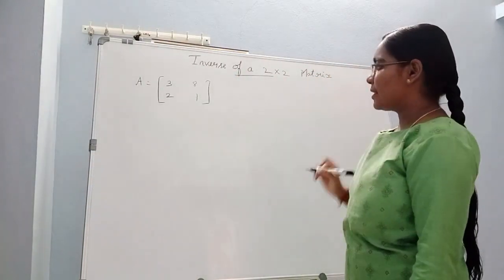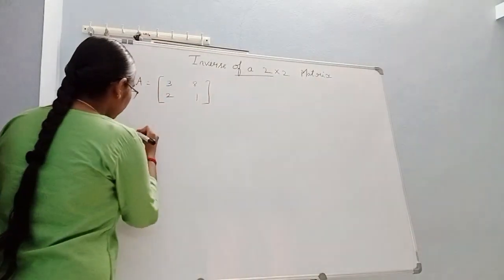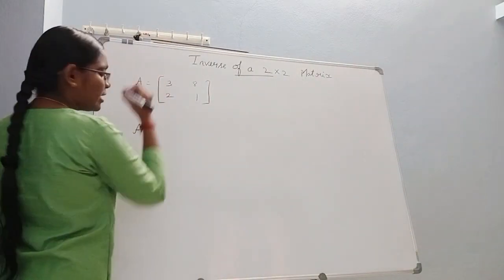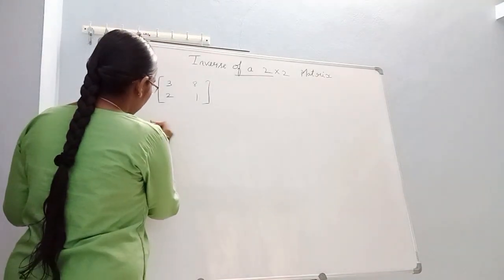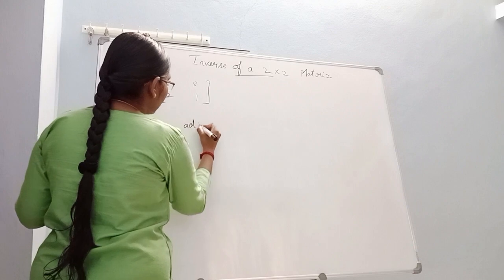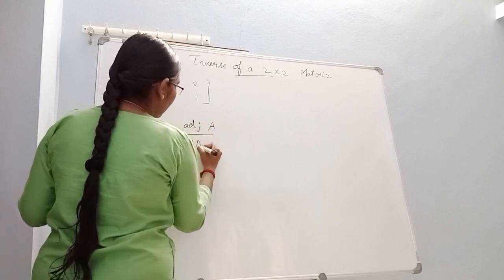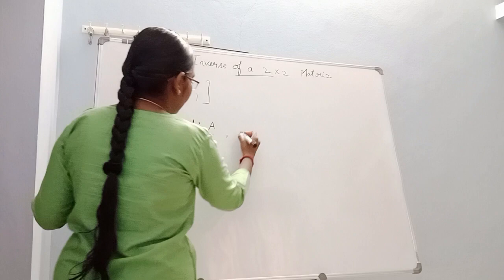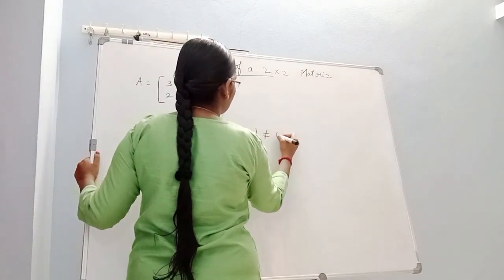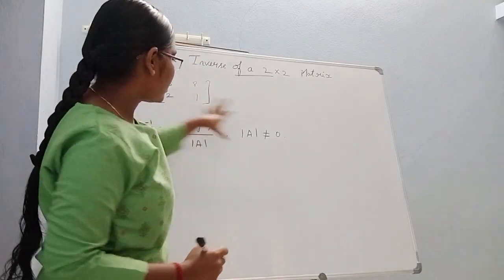Inverse of a 2x2 matrix. So this is the formula: A inverse is equal to adjoint of A divided by determinant of A, where determinant of A is not equal to 0. This is the A inverse method.